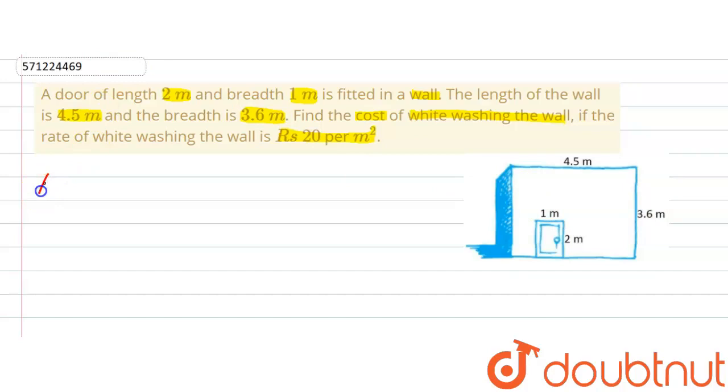First of all, we will find out the area to be whitewashed. Area to be whitewashed will be equal to the area of the wall. Because the wall is in the shape of a rectangle, and we know that area of a rectangle is length multiplied by breadth. So here the length is 4.5 meter and the breadth is 3.6 meter, subtracted by the area of the door.